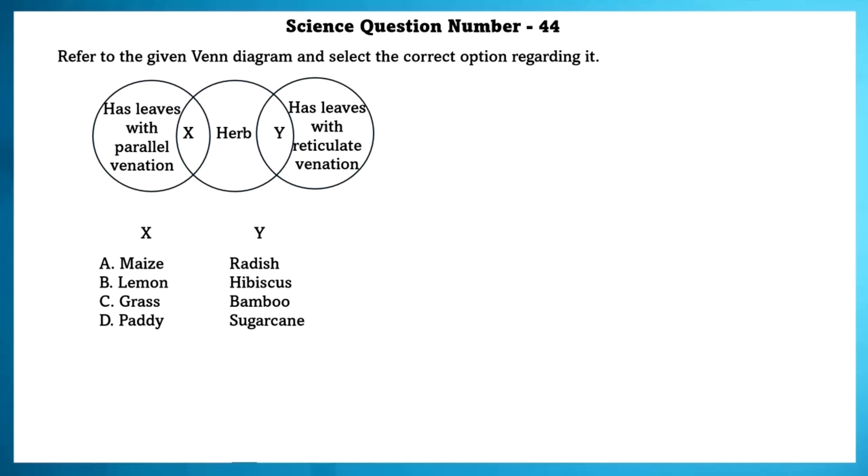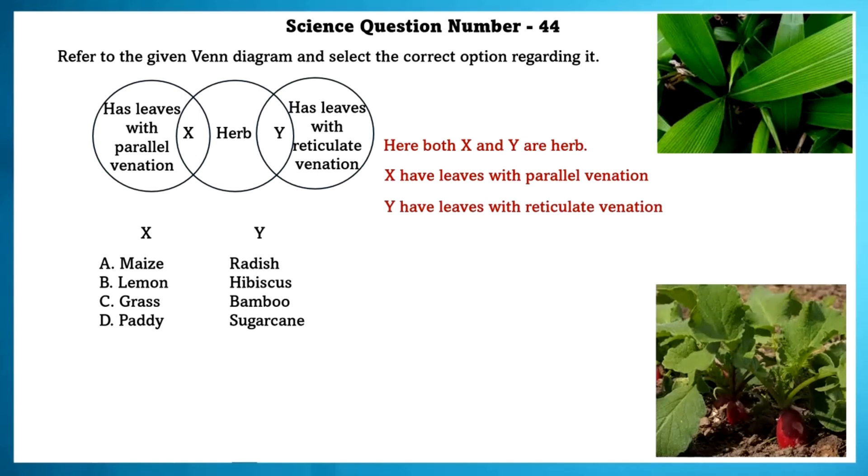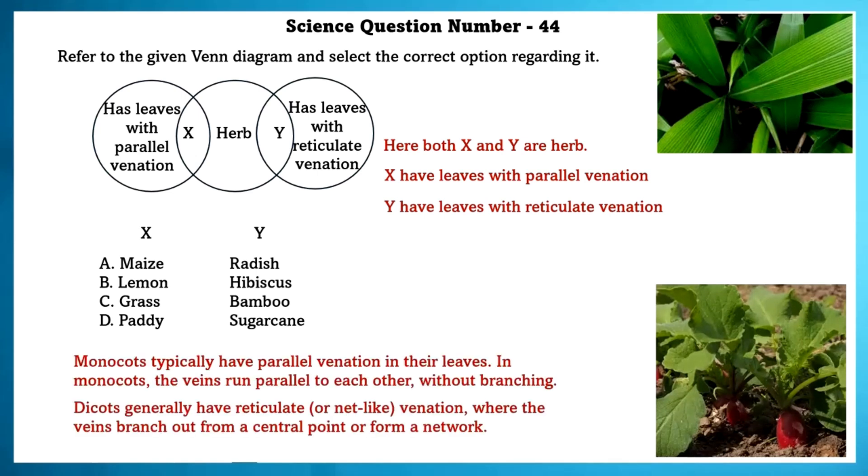Science question number 44. Refer to the given Venn diagram and select the option regarding it. Here, both X and Y are herbs. X has leaves with parallel venation. Y has leaves with reticulate venation. Monocot plants typically have parallel venation in their leaves. In monocots, the veins run parallel to each other without branching. Dicots generally have reticulate or net-like venation where the veins branch out from central point to form a network. The D option is cancelled. Because sugar cane has parallel venation. And bamboo is not a herb. So, option C is cancelled. Option B is cancelled because lemon has reticulate venation. So, we are left with the correct answer that is option A.